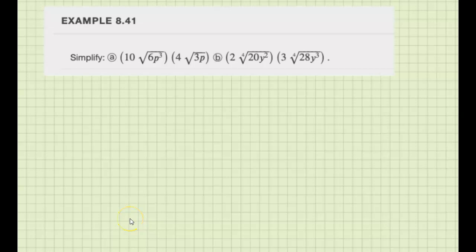Let's look at this next example. We're still multiplying. We have 10√6p³ times 4√3p. Just as before, we're going to multiply the outside numbers and multiply the radical numbers separately.